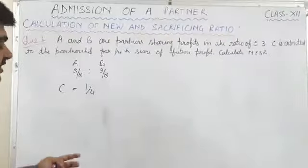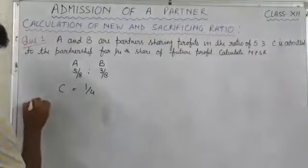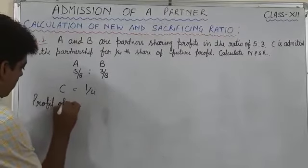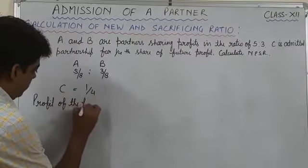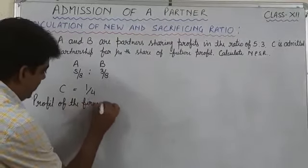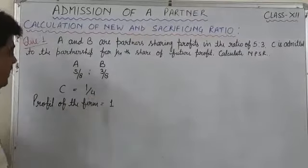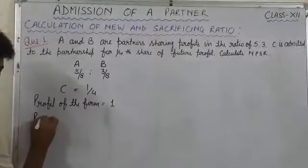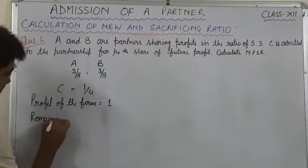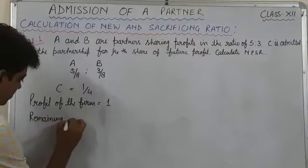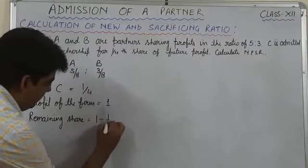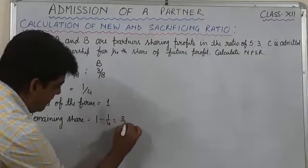Always remember one thing: profit of the firm is always 1. You can see C is admitted for 1/4 share. So first of all we will calculate remaining share. Remaining share will be 1 minus 1/4, that is 3/4.